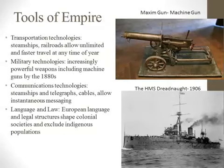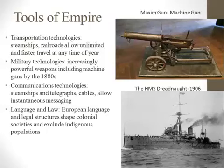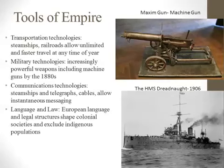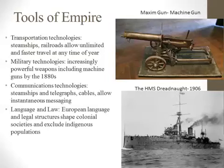The primary tools of empire — what made the High Imperialism possible — were certain technologies. The development of steam technology, steamships and railroads, allowed colonial powers to move many more people and far more resources much faster. Steamships also allowed colonial forces to traverse rivers far more easily, going much deeper into the areas they were trying to control.